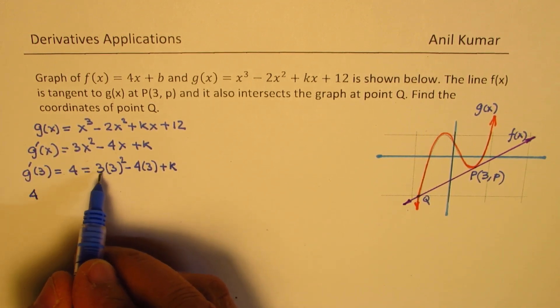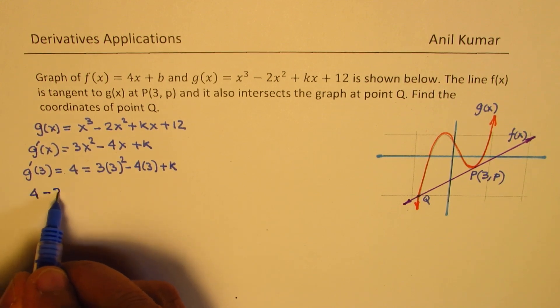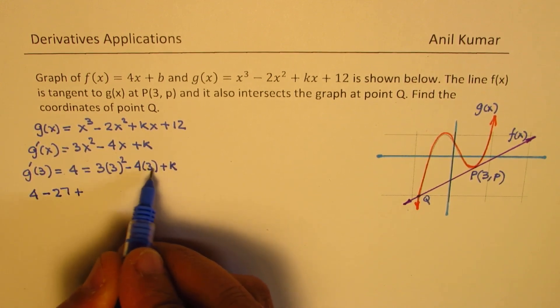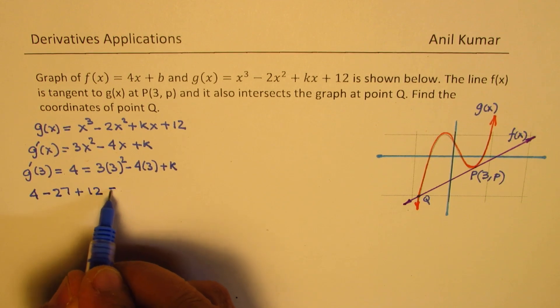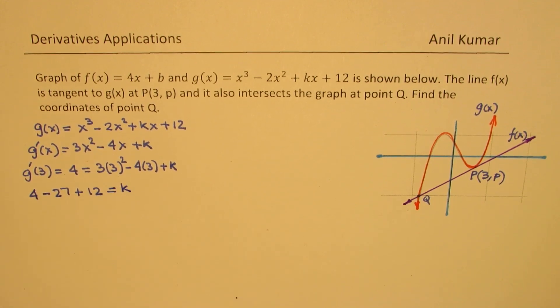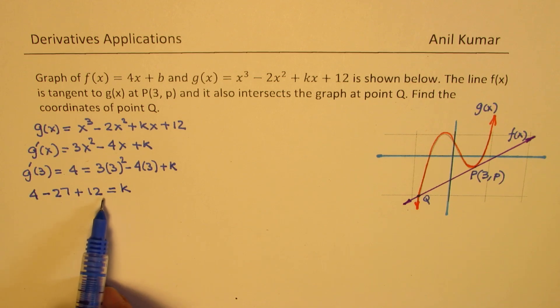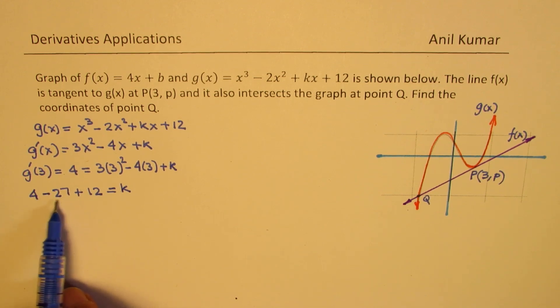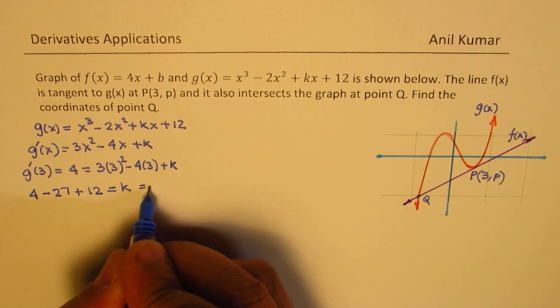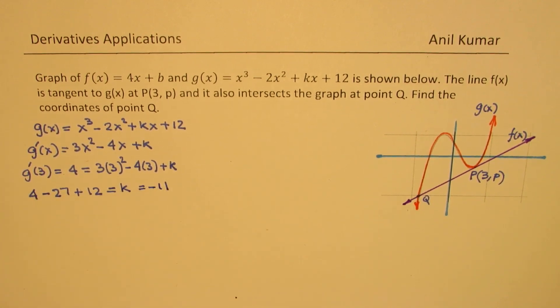So bringing all these terms to the left side, we get 4 - 27 + 12 = k. 3² times 3 is 27. So 4 + 12 is 16. When you take away 16 from 27, minus 11 is the value of k. So we get k = -11.